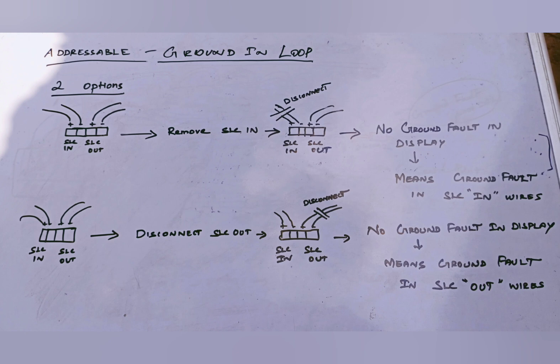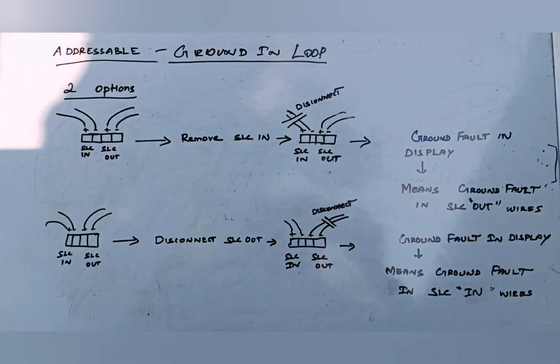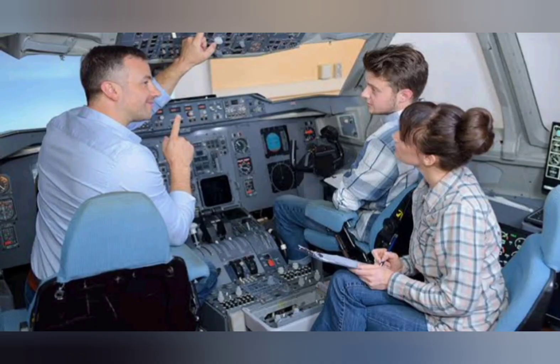When you will disconnect SLC in pair wire, if FACP will show the ground fault, which means SLC out has the ground fault. When you will disconnect the SLC out pair wire, if FACP will show the ground fault exists, which means SLC in has the ground fault. By using these simple steps, we can find out the ground fault easier and quicker.